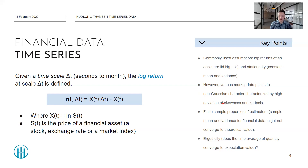This non-Gaussian character can be measured by the skewness and kurtosis, which characterize the deviation from a Gaussian distribution. There's also the topic of finite sample properties of estimators — in particular, the sample mean and variance for financial data might not converge to the theoretical values of the distribution you're using. There's also the topic of ergodicity: does the time average of some quantity converge to the actual expectation value? I'll refer you to Rama's paper if you'd like to know more.